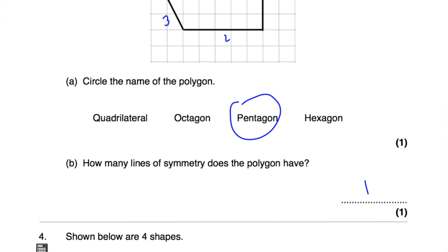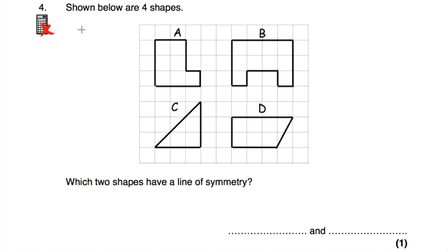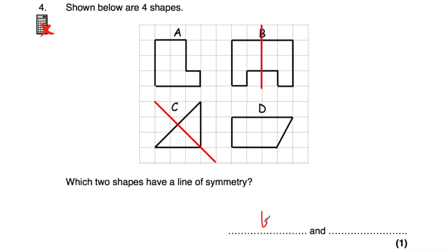Question number 4: we've got four shapes A, B, C, and D, and we've been asked which two shapes have a line of symmetry. Shape A doesn't have a line of symmetry. Shape B does — it has a vertical line of symmetry. Shape D doesn't. But shape C does — it has a diagonal line of symmetry. So B and C have lines of symmetry.